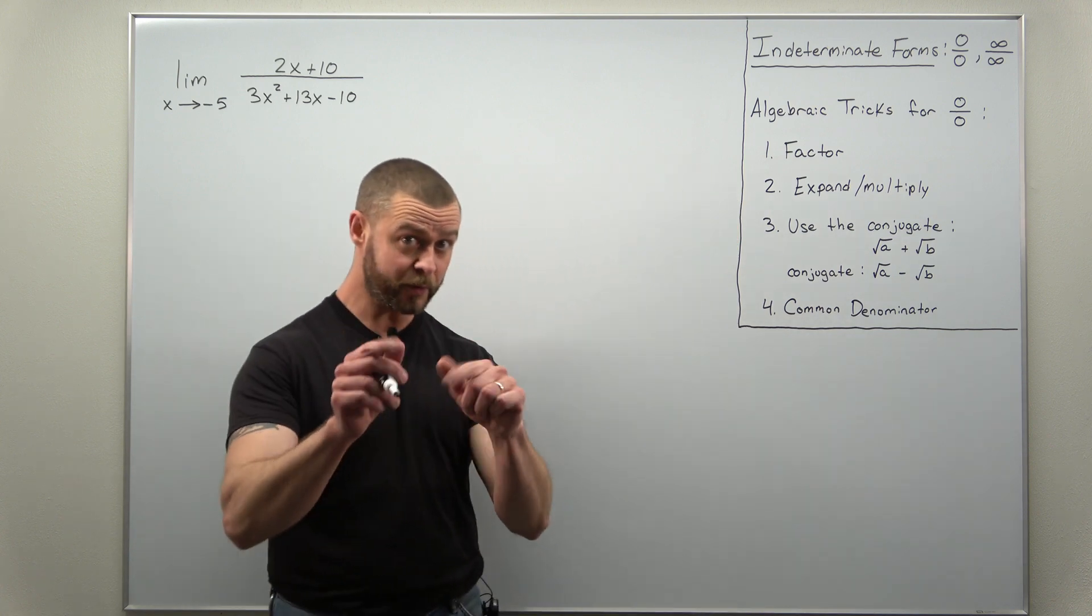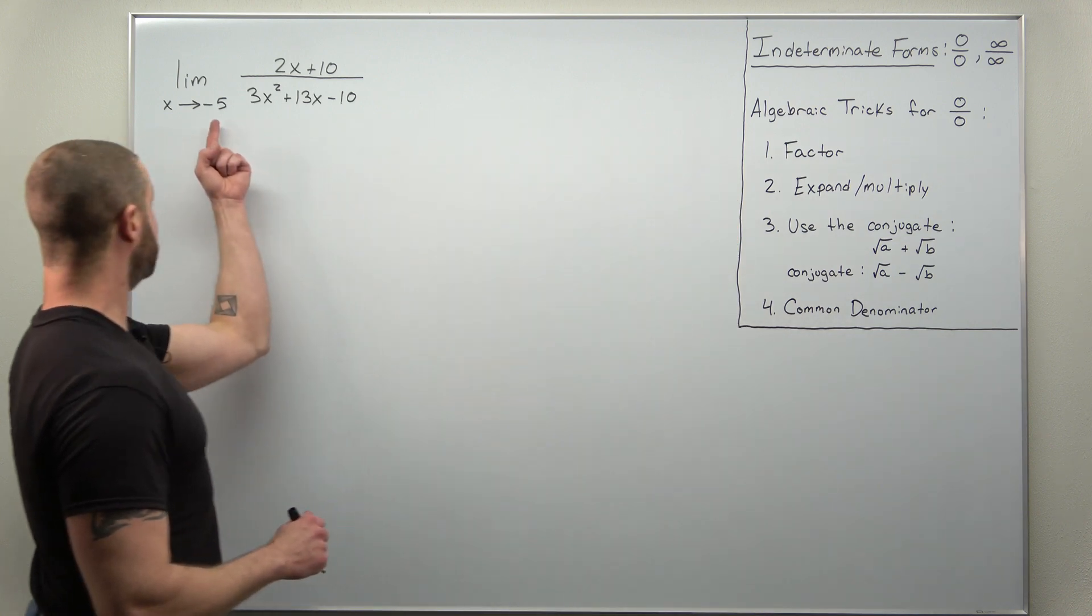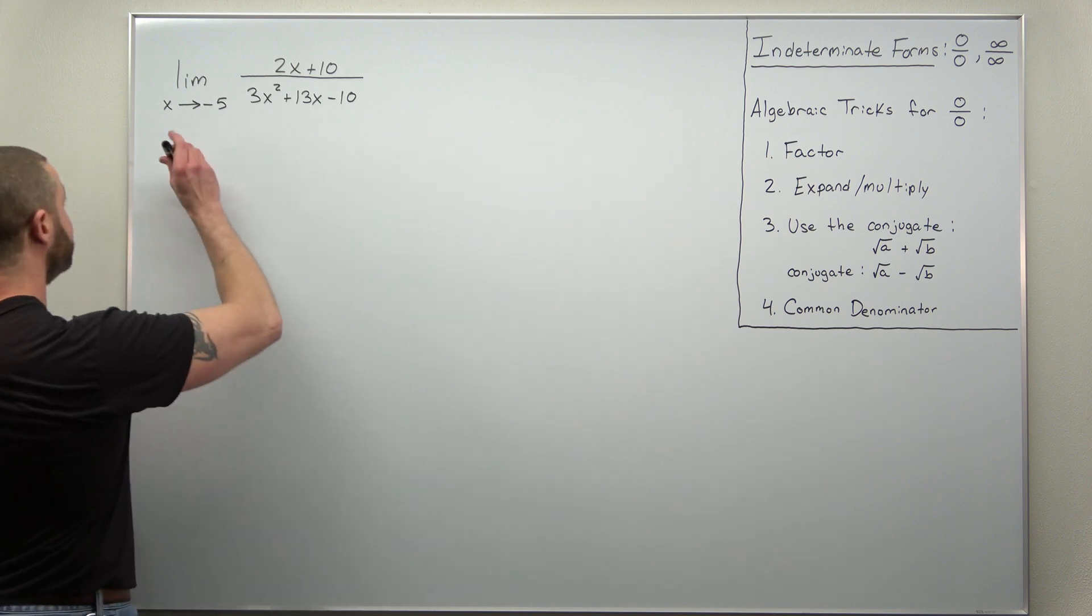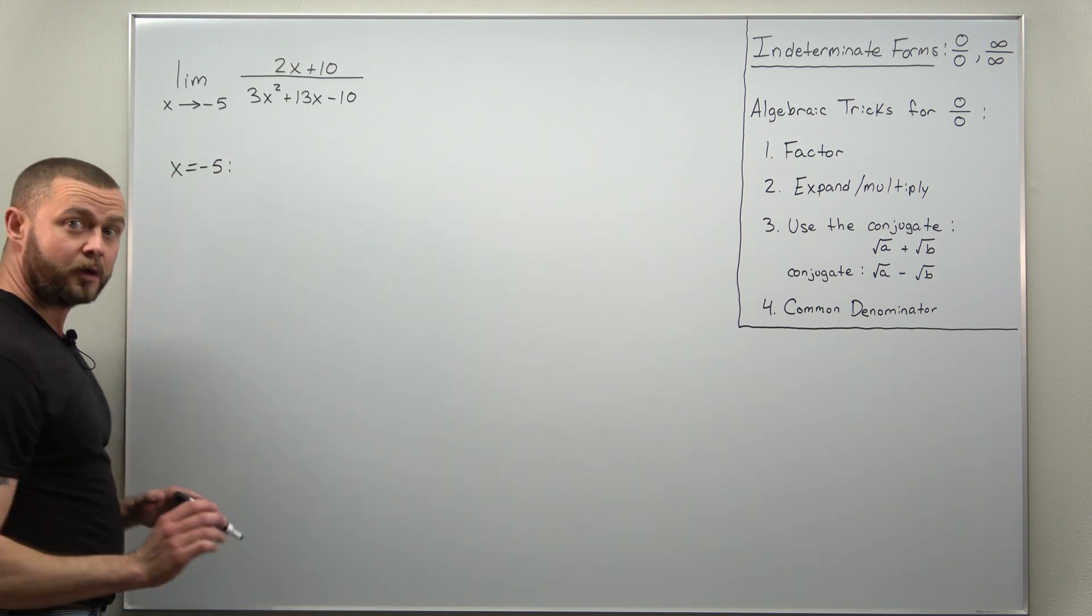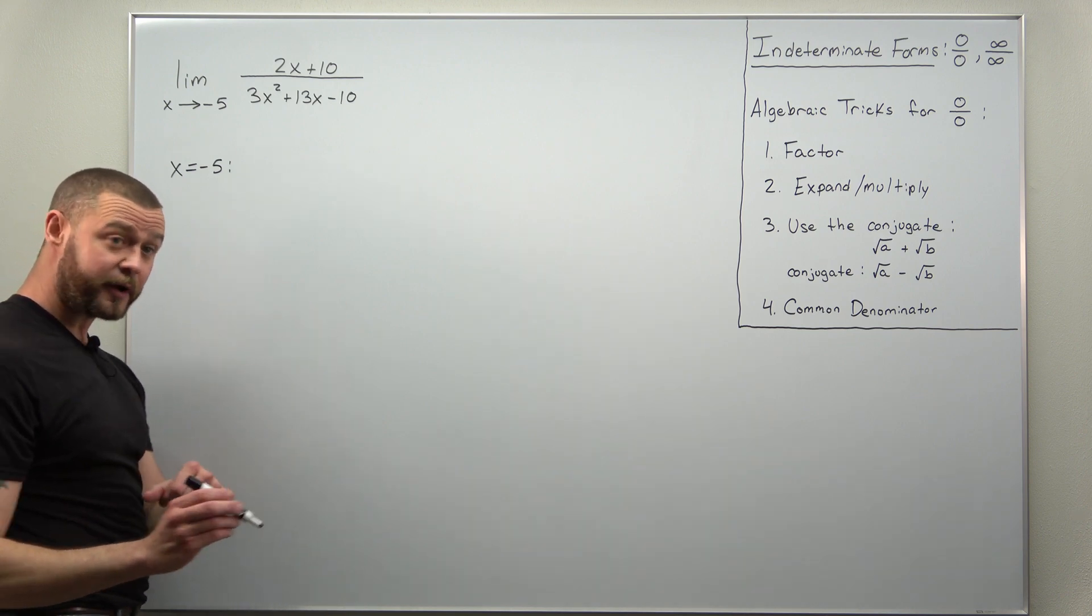Now to get started you always want to check that first. So let's plug in x as negative 5. It's easy to see that your numerator becomes 0.